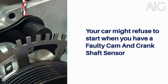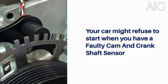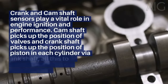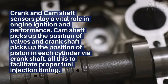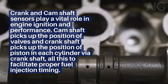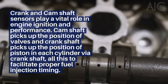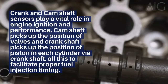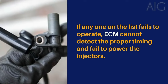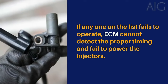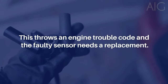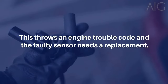Your car might refuse to start when you have a faulty cam or crankshaft sensor. Crank and camshaft sensors play a vital role in engine ignition and performance. The camshaft picks up the position of valves and the crankshaft picks up the position of the piston in each cylinder, all to facilitate proper fuel injection timing. If either sensor fails to operate, the ECM cannot detect the proper timing and will fail to power the injectors. This throws an engine trouble code and the faulty sensor needs replacement.